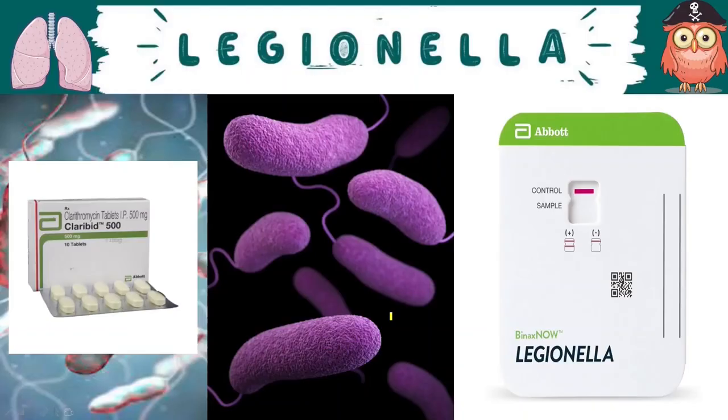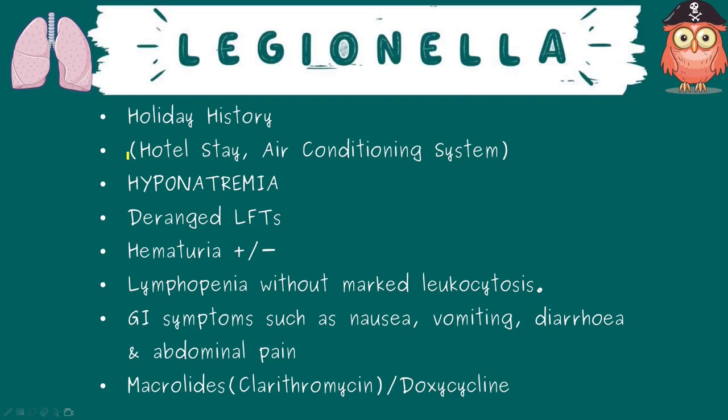Dr. Bob has Legionella, and the right answer is clarithromycin. Legionella typically infects air conditioning systems, so questions give a history of a recent hotel stay, attending conferences, or cruise ships — any place with air conditioning or water cooling systems. Any case with hyponatremia: please consider Legionella as a very important differential — this is the hallmark of Legionella.